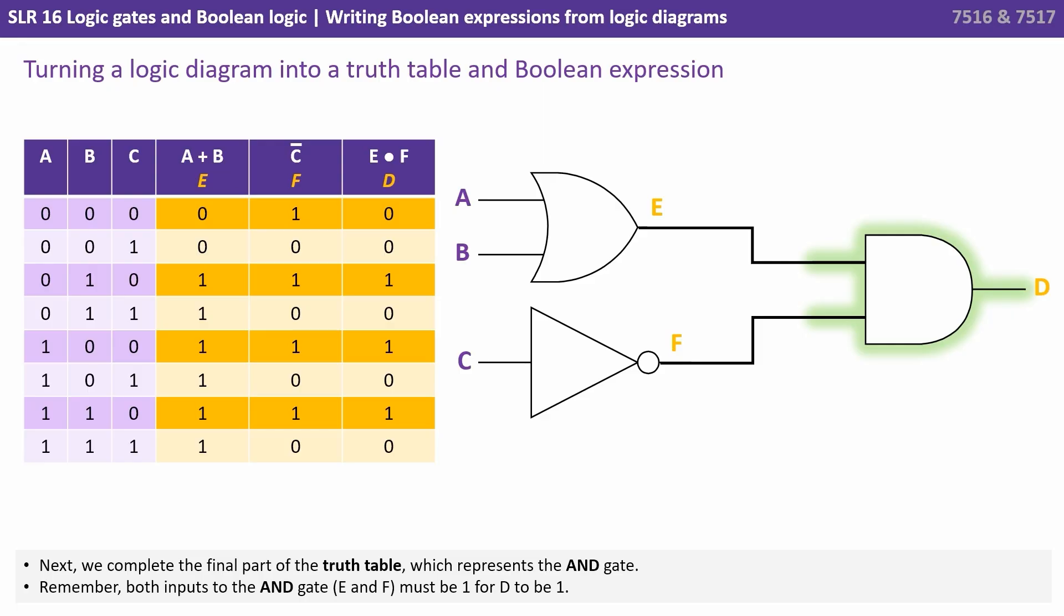Next we complete the final part of the truth table which represents the AND gate. Remember both inputs to the AND gate, that's columns E and F, must be 1 for D to be 1. And you can see we've done that there.